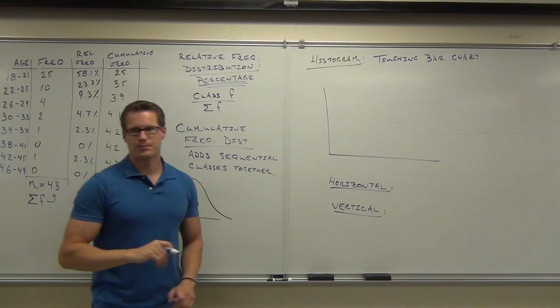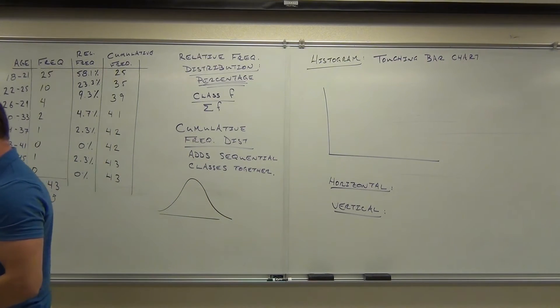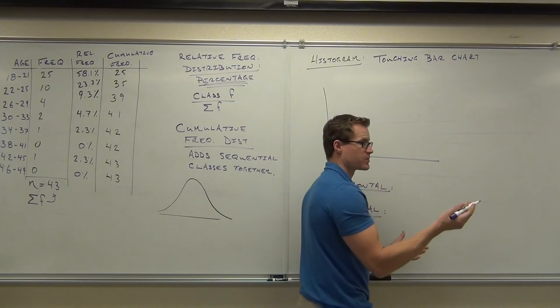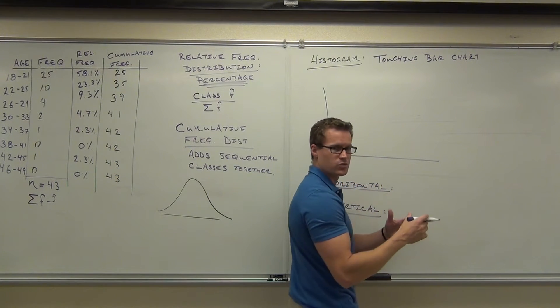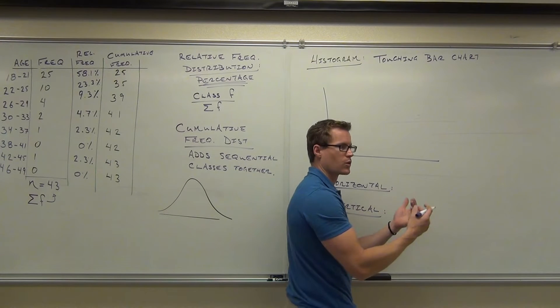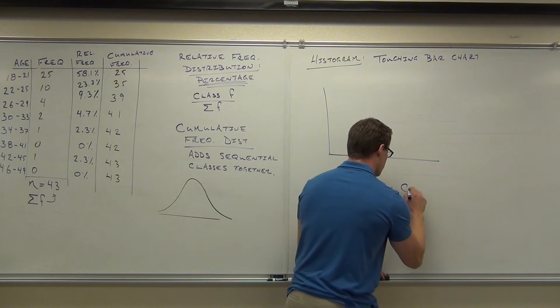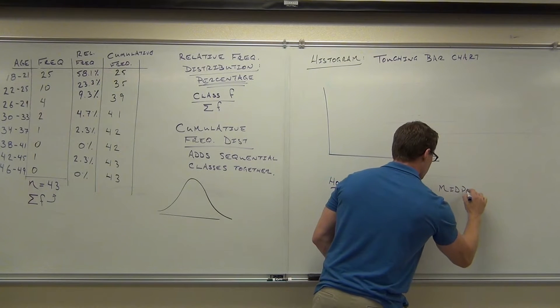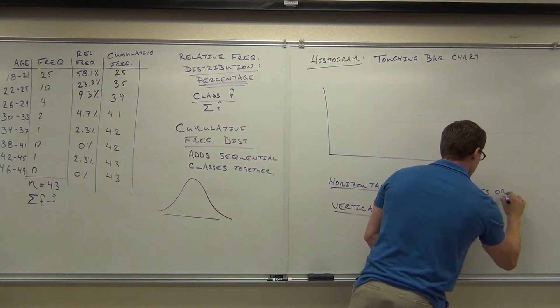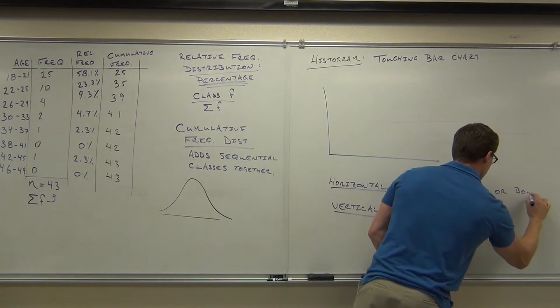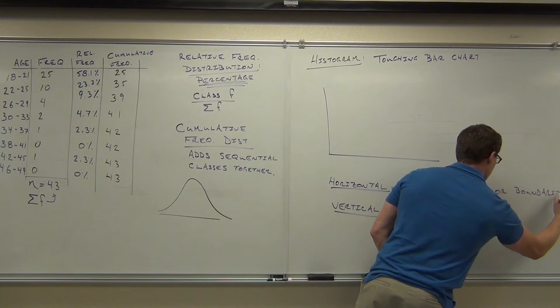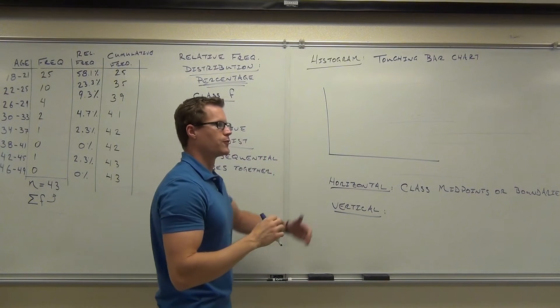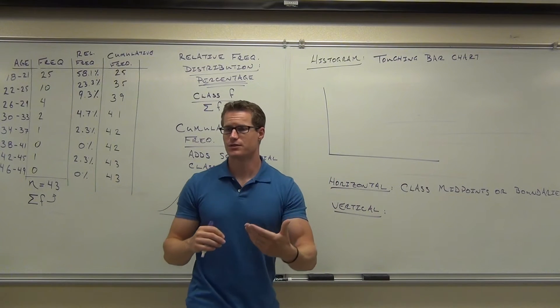On the horizontal axis we are going to put our classes. You use either the midpoints or the boundaries - it's your choice. Unless they specify which one you're going to use, it doesn't matter. You can use the midpoints or the class boundaries. On the vertical is going to go your frequency or your relative frequency.